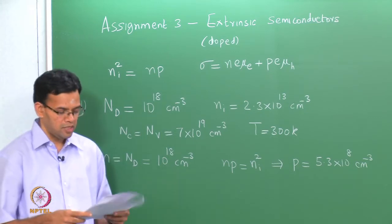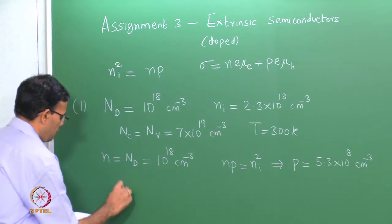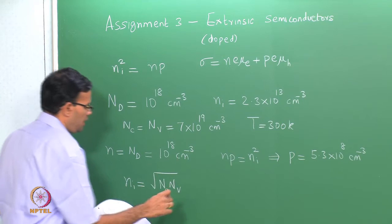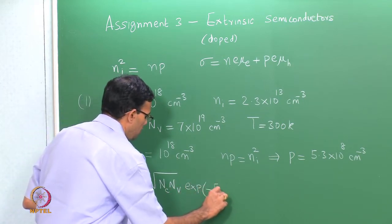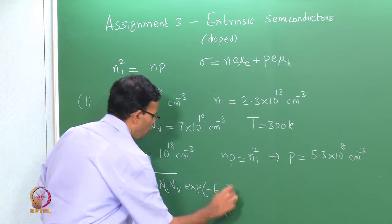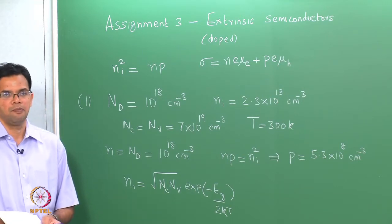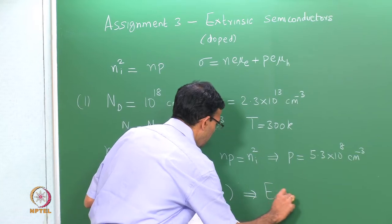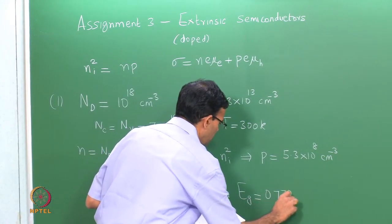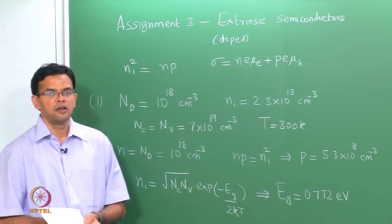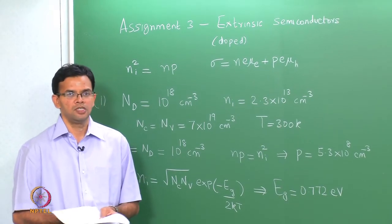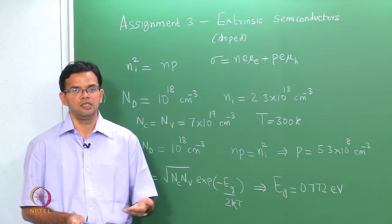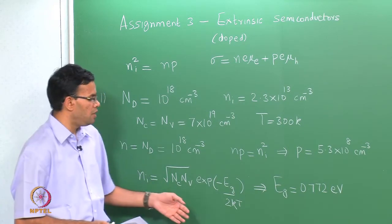What is the band gap of the semiconductor? To calculate the band gap we use the intrinsic equation from assignment 2: N_i = √(N_c · N_v) · exp(−E_g / 2kT). N_c and N_v values are given, temperature is known, N_i is known, so the only unknown is E_g. E_g works out to be 0.772 eV. We can guess that the material is germanium, but germanium usually has a band gap of around 0.67 eV. Here N_c = N_v, which is not true for germanium, but this is the calculated band gap.